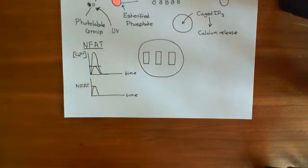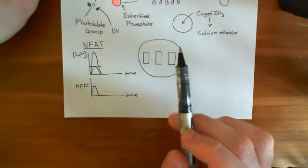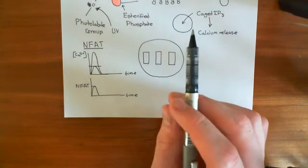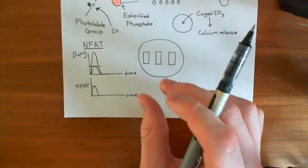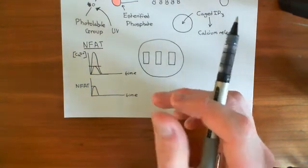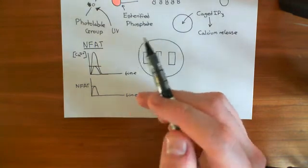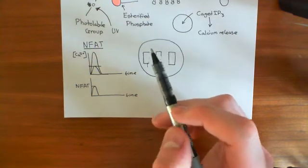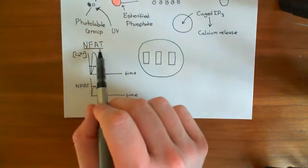Welcome to this next video on the nuclear factor of activated T-cells and the nuclear factor kappa B. We're having a bit of a discussion about efficacy in pharmacology. Basically, what we are discussing is if you've got a certain amount of calcium ions to release within a cell, and you can choose how to release them, you could release them all in one go, and you'll get a certain amount of NFAT activity.